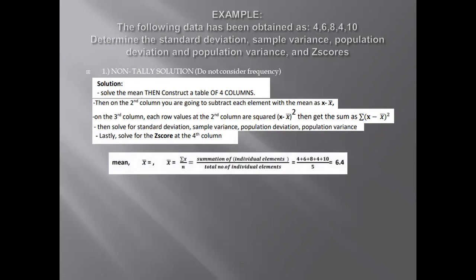Now let's proceed with the quantitative solution. The first step is the mean. x-bar is calculated as the summation of individual elements all over the total number of individual elements. The individual elements are 4 plus 6 plus 8 plus 4 plus 10, all over the number of elements, which is 5. This gives us 6.4.